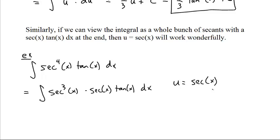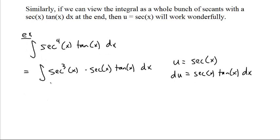If we set u equal to secant of x, du is secant x tangent x dx. All of this becomes du, and this whole thing becomes u cubed. Remember, we didn't set u equal to secant cubed, just the underlying secant, so this becomes u cubed and this becomes du.